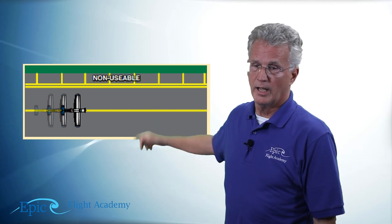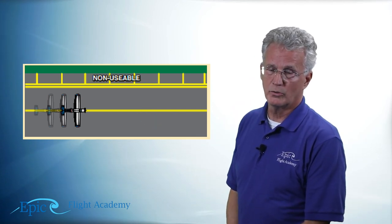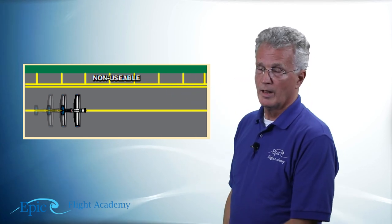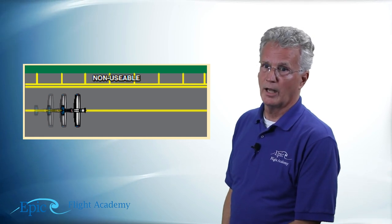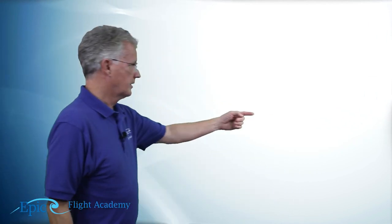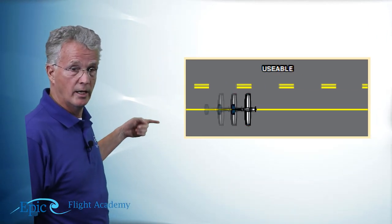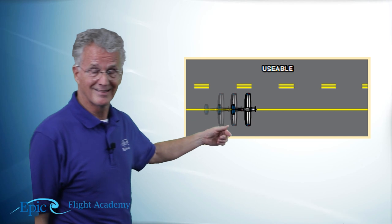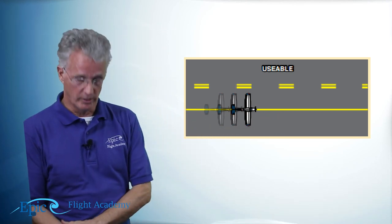In addition, taxiways have a solid yellow line right down their center. Take a look at this one. Here's my aircraft taxiing right down this solid yellow line. And off my left wing tip, I see two parallel solid yellow lines and these yellow hatch marks. That tells me that surface is non-usable. Now, here's a very similar diagram. My airplane is taxiing right down this yellow line and off my left wing tip are parallel yellow lines, but they're spaced. That taxiway could be usable.